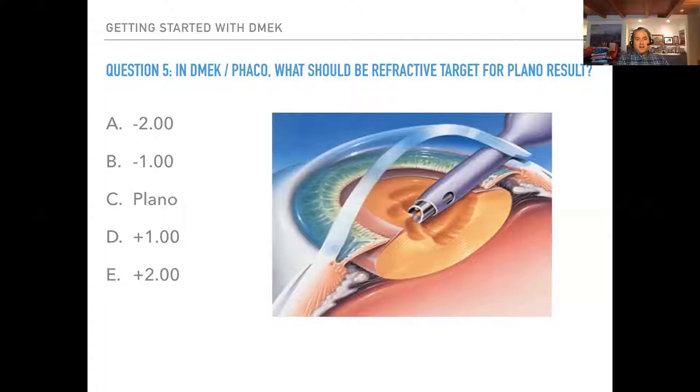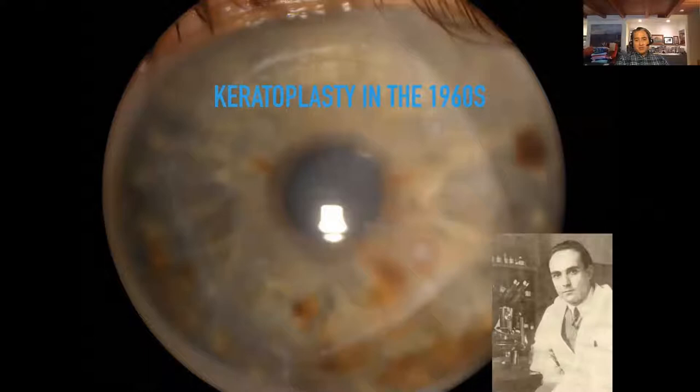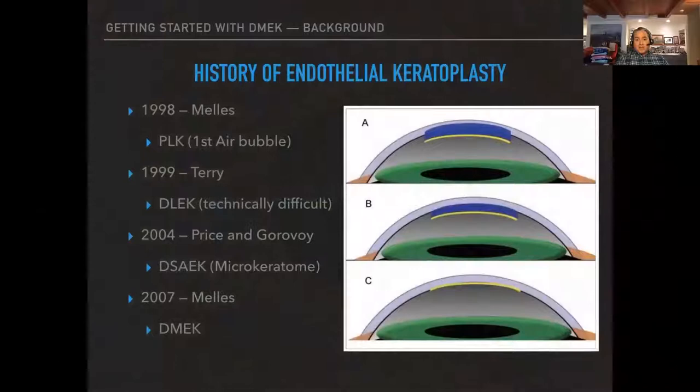I shoot for around minus 0.50 to minus 0.75 for the refractive target in a combined DMEK-FACO case. Now let's talk about background of corneal transplantation. This is a photo from a patient who had an original square graft done by Castroviejo in the 1960s — the cornea was from a 60-year-old back then, making it over 100 years old. They had steel sutures and special knives that could cut only in a square pattern.